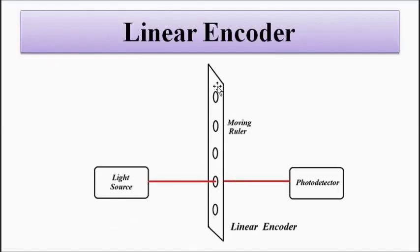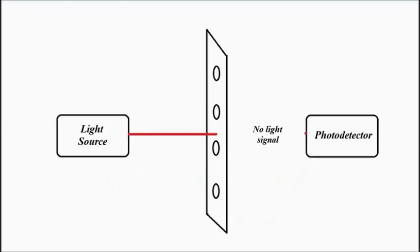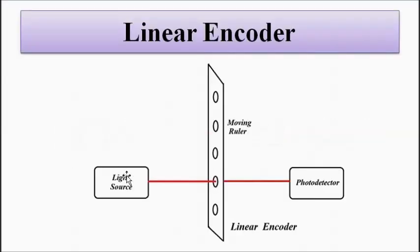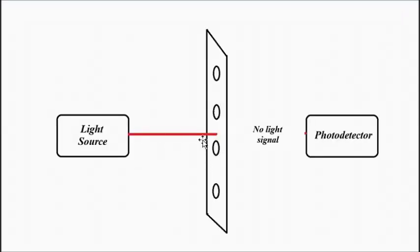And depending on the design which is formed on the ruler, sometimes light is allowed to be transmitted and sometimes it is blocked. So when light is passed through, it is captured by the photodetector and produces a signal. And when there is no light transmission, the photodetector produces no signal.